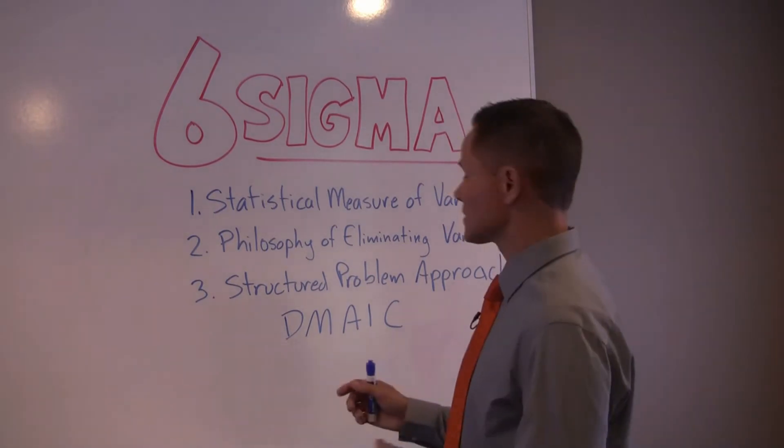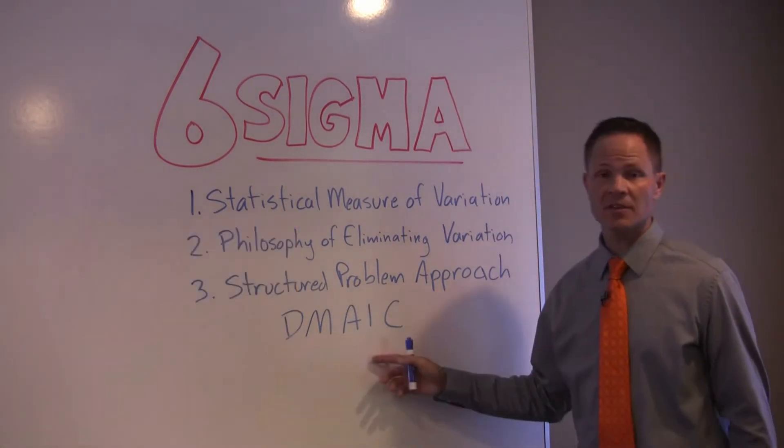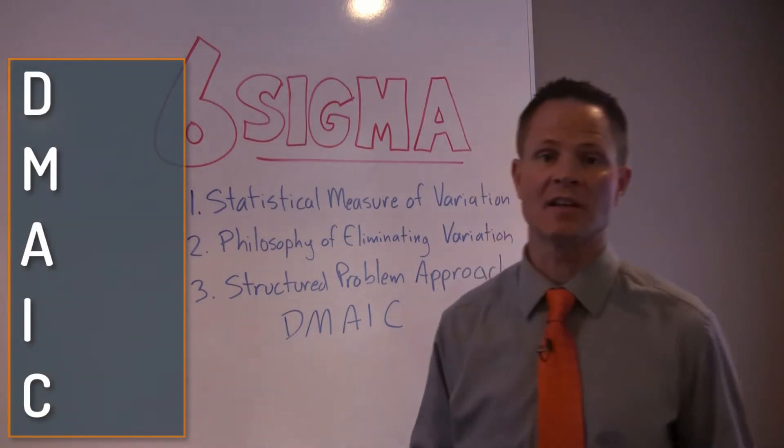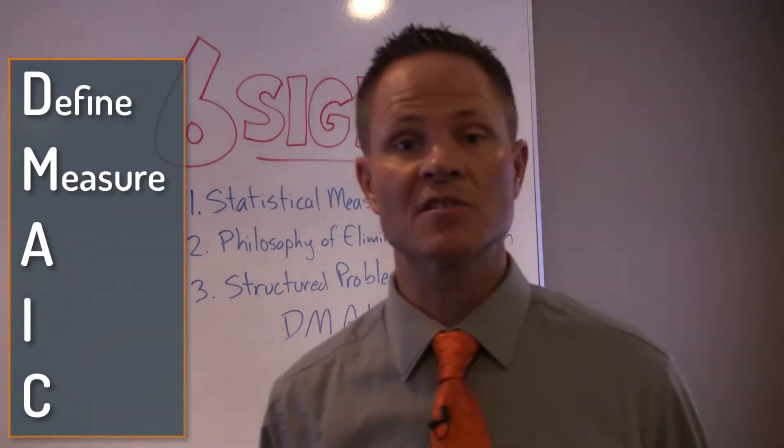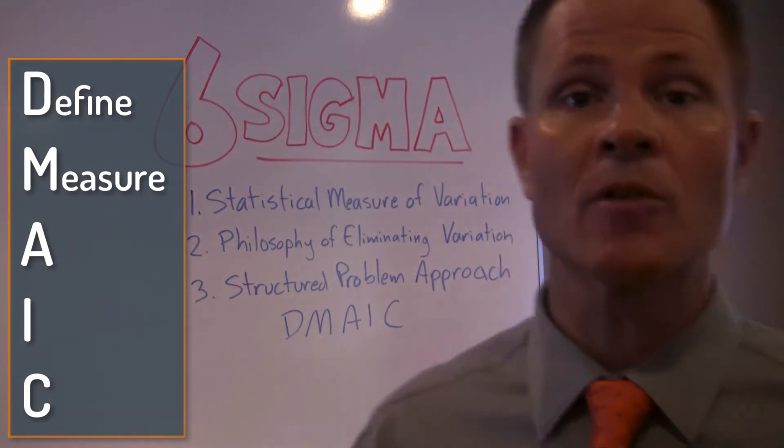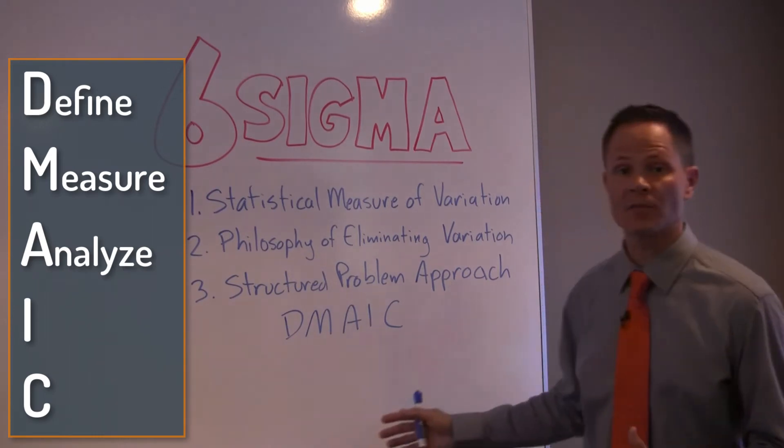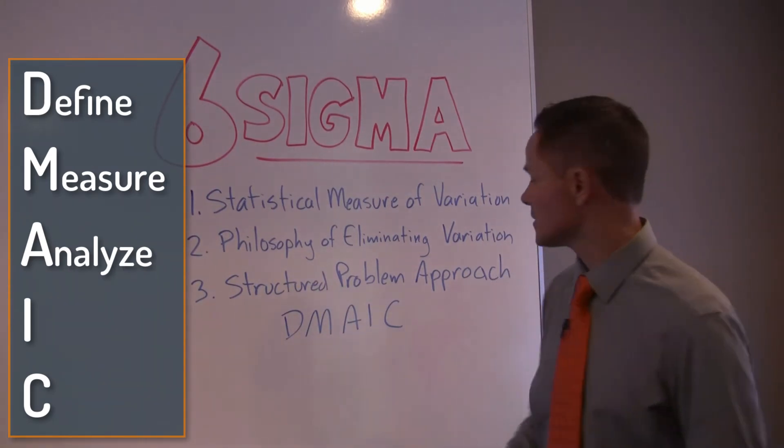The third thing that Six Sigma is is a structured problem-solving approach, specifically using the DMAIC methodology. D stands for define—defining the problem. M stands for measure—measuring the process or the value stream to understand how it works. A is for analyze. This is when we get to the root cause of the problem so that we can then put countermeasures or solutions in place.